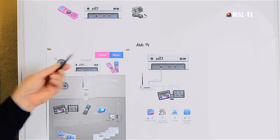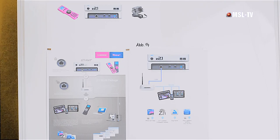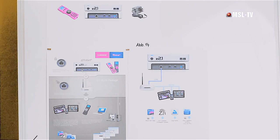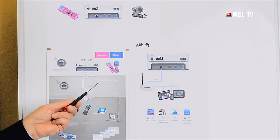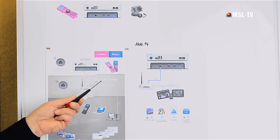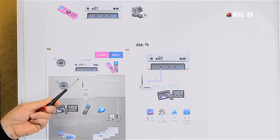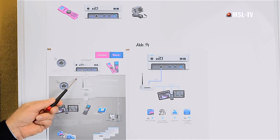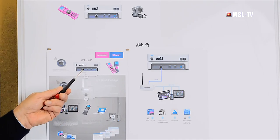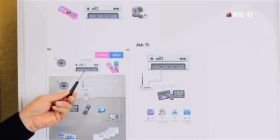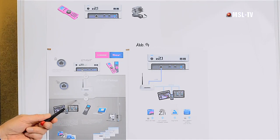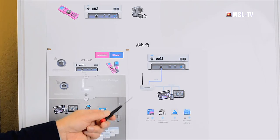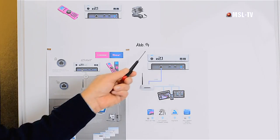Hier sehen wir jetzt dargestellt den Inhalt der sechsten Folge. Wodurch ist die gekennzeichnet? Wir machen von dem vorhin schon mal genannten WLAN-Package Gebrauch. Das heißt, wir nutzen den modularen Charakter der Z21, nehmen einen WLAN-Router, schalten den an die weiße Z21 an und haben somit Zugriffsmöglichkeiten mittels Tablet-PCs und Smartphones. Das Ganze sehen wir auch hier nochmal dargestellt.